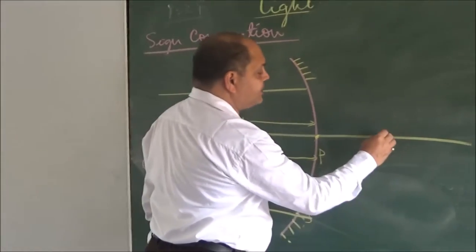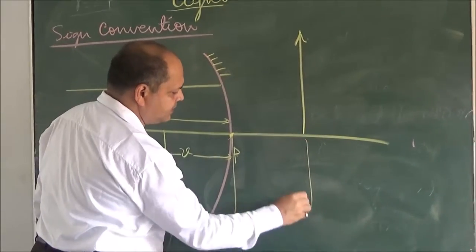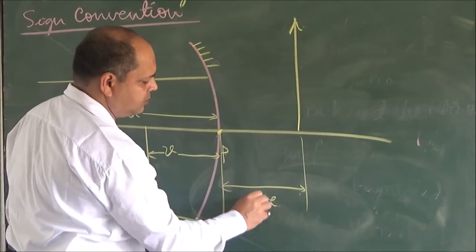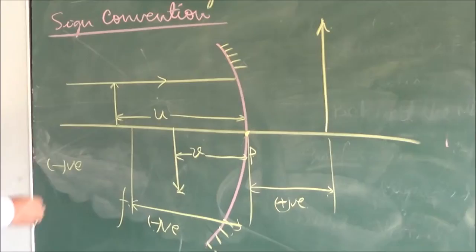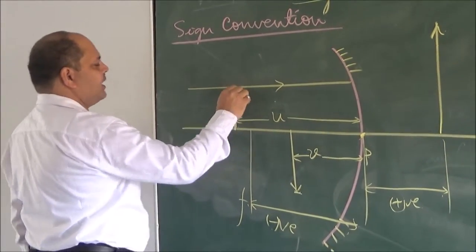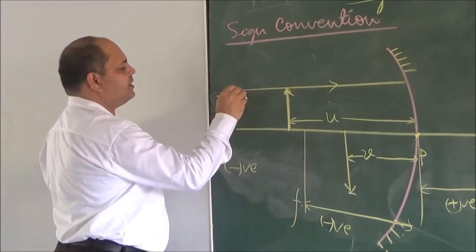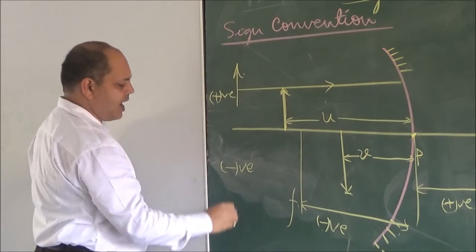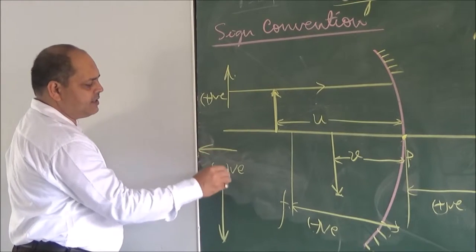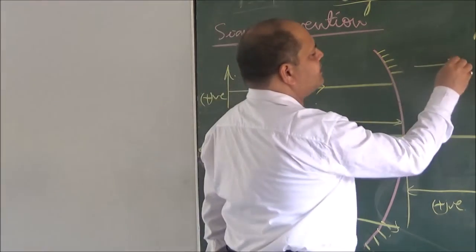If the image is formed on this side, then this position is positive. The height of the object above the principal axis is positive, and below the principal axis it is negative. So this side is negative, this side is negative, this side is positive, and this side is positive.